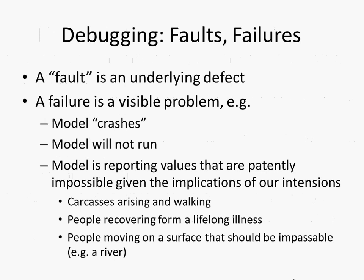I'm going to use some terms consistently. We use the term 'fault' to denote some underlying defect we hypothesize exists within our software or implementation. A 'failure' is an obviously visible problem that indicates the presence of a fault — for example, the model crashes, throws an exception and dies, writes corrupt data to a database, simply won't run, or reports values that are impossible given the implications of our intention.